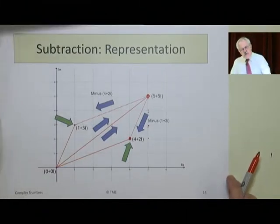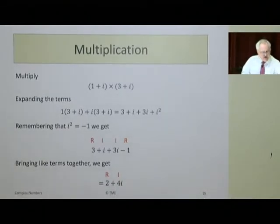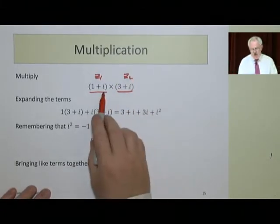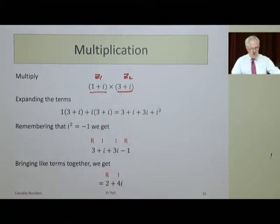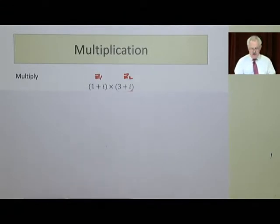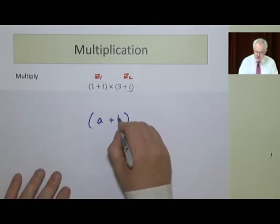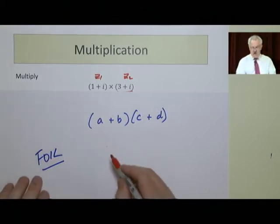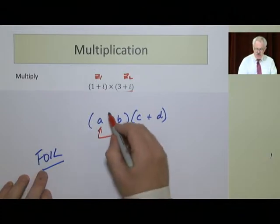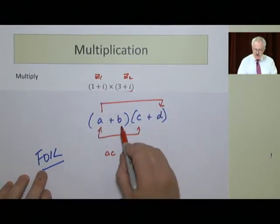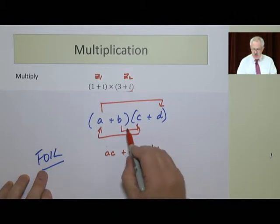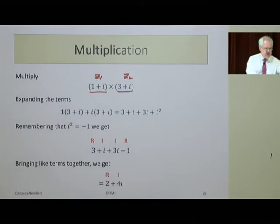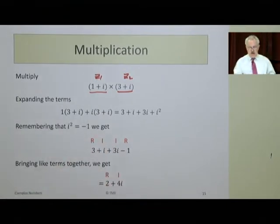The next step in complex numbers is multiplication. Multiplication allows us to take two numbers, this is z1 and this is z2: (1 plus i) by (3 plus i). The Americans call this the FOIL method where you have (a plus b) times (c plus d). You use the first ones, a by c, then the outsides, a by d, then the insides, b by c, and then the last, bd. It's exactly the same. You have two numbers in brackets and we multiply them out.